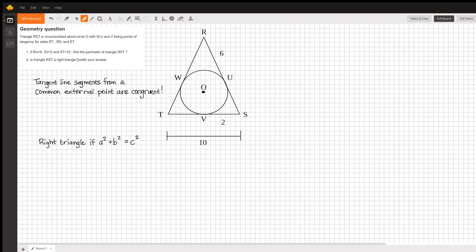We were also given some information about some of the sides of this triangle: that the length from R to U was 6, that the distance from S to V was 2, and that the distance from S to T in total was 10.